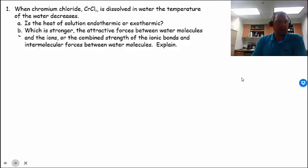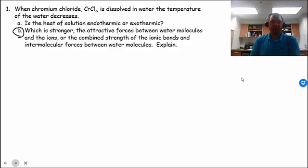Part B says, which is stronger, the attractive forces between water molecules and the ions, or the combined strength of the ionic bonds and the intermolecular forces between the water molecules? Explain.